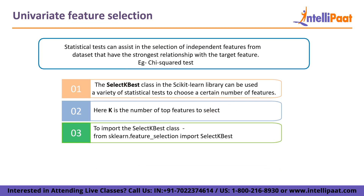Moving on to univariate feature selection. Statistical tests can assist in the selection of independent features from a dataset that have the strongest relationship with the target feature, for example, the Chi-Square test. The SelectKBest class in the Scikit-Learn library can be used with a variety of statistical tests to choose a certain number of features, where K is the number of top features to select. To import the SelectKBest class from sklearn.feature_selection, use import SelectKBest.